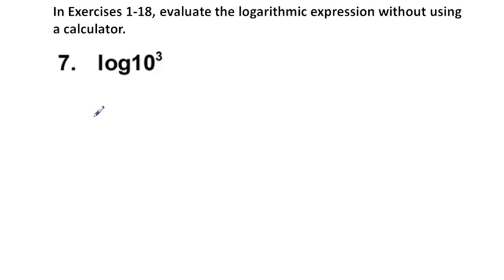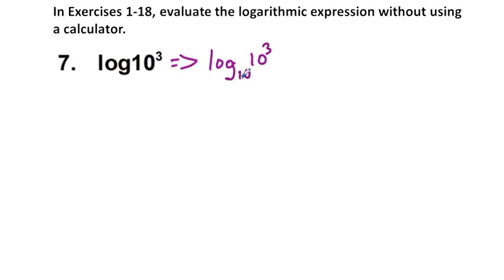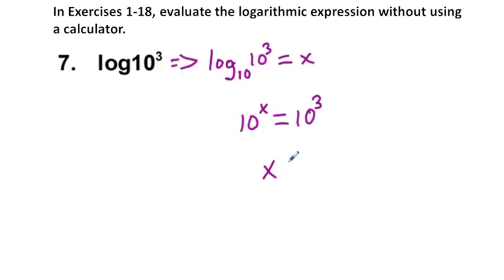Next, problem 7: we have the log of 10 to the third power. When we see log without a subscript, that's called the common logarithm, which is log base 10. So this is log base 10 of 10 to the third power. We're being asked what number we have to raise 10 to in order to get 10 to the third power. Setting this equal to x, we have 10 to the power of x equals 10 to the third power. So x is equal to 3.